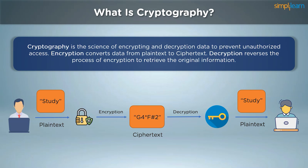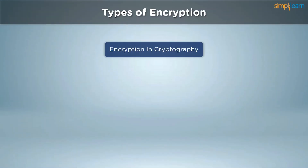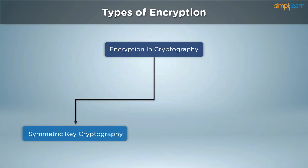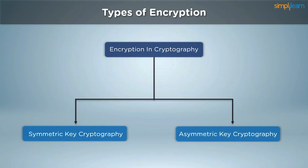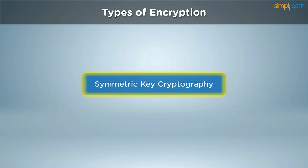Depending on the type of cryptography being used, the decryption key can be the same key used for encryption or it can be completely different. There are two types of encryption in cryptography: symmetric key cryptography and asymmetric key cryptography. Both categories have their pros and cons and differ only by implementation. Today we are going to focus exclusively on symmetric key cryptography.